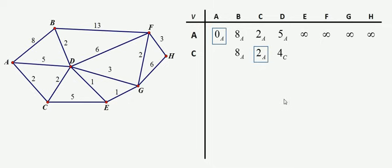And I'll put a C as a subscript, indicating that C was the vertex I came most recently from. I can get from vertex C to E with a weight of 5, so 5 added onto the 2 gives me a weight of 7 in total.